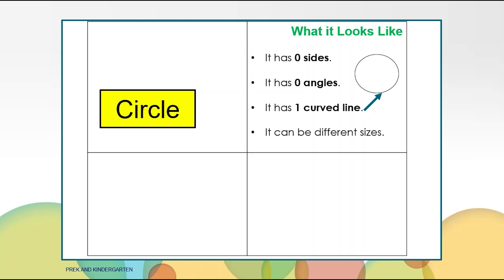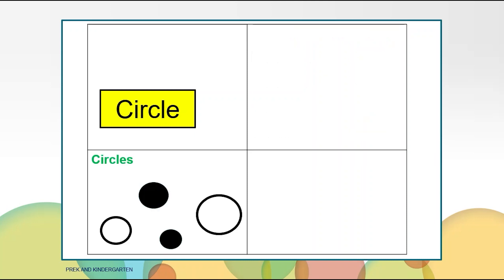A circle can be different sizes. It can be really small and it can be really big. Here are some examples of circles. See how they are all closed shapes and have no corners or straight lines?